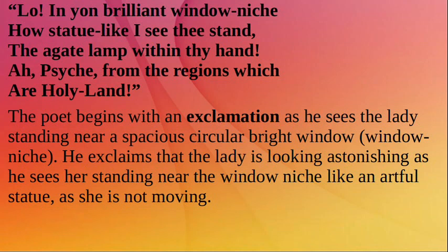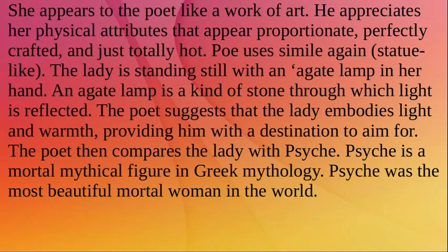The poet begins with an exclamation as he sees the lady standing near a spacious, circular, bright window niche. He exclaims that the lady looks astonishing as she stands near the window niche like an artful statue, perfectly still. She appears to the poet like a work of art — he appreciates her physical attributes that appear proportionate and perfectly crafted. Poe uses simile again: "statue-like."